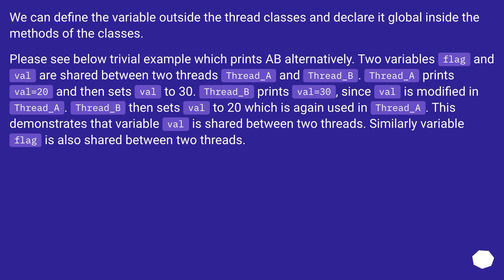thread_a prints val equals 20 and then sets val to 30. thread_b prints val equals 30, since val was modified in thread_a. thread_b then sets val back to 20, which is again used in thread_a. This demonstrates that variable val is shared between two threads. Similarly, variable flag is also shared between two threads.